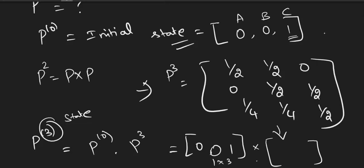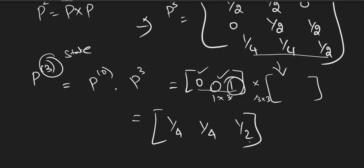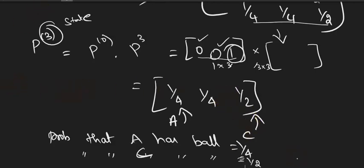Multiplying 1×3 by 3×3 gives a 1×3 answer. Since the initial state vector selects the third row of P³, you get the values 1/4, 1/4, 1/2. The question asks: what is the probability that A has the ball? That is 1/4. What is the probability that C has the ball? That is 1/2. So, probability that A has the ball is 1/4 and C has the ball is 1/2. Thank you.